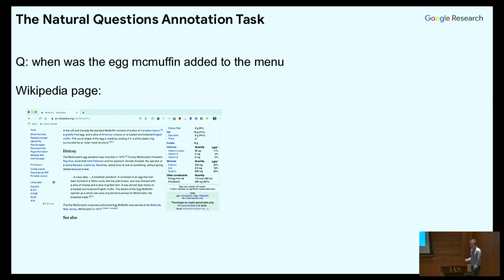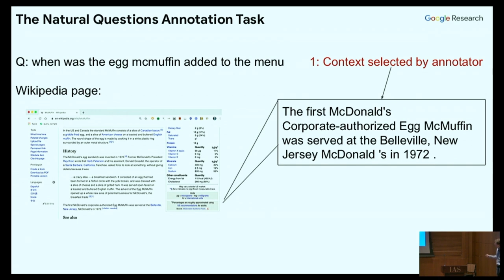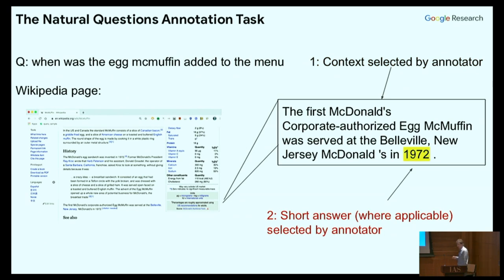We present an annotator with the top-ranked Wikipedia page for that question. Their annotation proceeds in two steps. In the first step, they decide whether the page actually contains an answer to the question — they can mark no answer, or if there is an answer they mark a paragraph that contains the answer and all the information that implies the answer. In the second step, where possible, they mark a short answer from within that paragraph. For about 75% of cases where we have a long answer, there's also a short answer — typically a date, a named entity, or something along those lines.